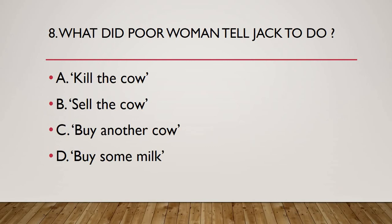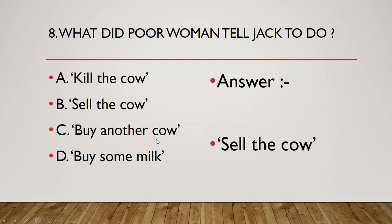Question 8: What did the poor woman tell Jack to do? Poor woman means Jack's mother. Options: kill the cow, sell the cow, buy another cow, or buy some milk. One day the cow stopped giving milk, so what did Jack's mother tell him? The correct answer is sell the cow — that is why Jack sold the cow for five bean seeds.